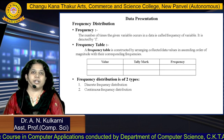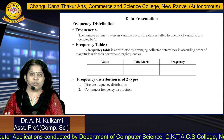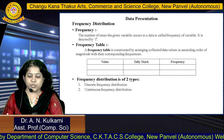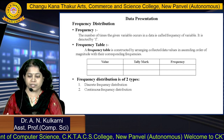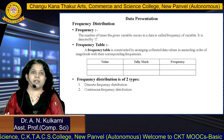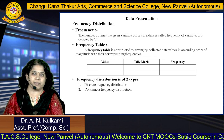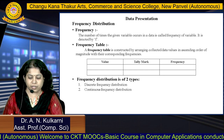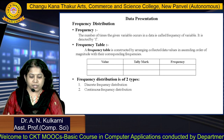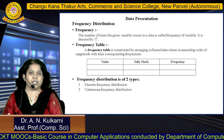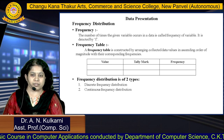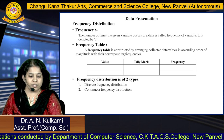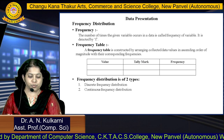Next is data presentation. Previously we have seen what is data and the categories of data. After that we have to present data. For that, first we need frequency distribution. Frequency is the number of times a given variable occurs in data — it is called the frequency of the variable and is denoted by F. For that we can construct a frequency table, by arranging the collected data values in ascending order of magnitude with their corresponding frequencies. In the frequency table, the first column has values of data items, second is tally mark, and third is frequency. Tally mark is the representation for each value.